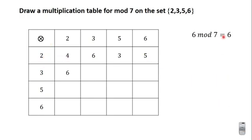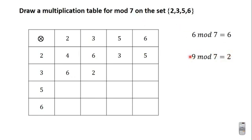Moving on to the next row. 3 × 2 is 6, and 6 mod 7 is 6. 3 × 3 is 9, and 9 mod 7 is 2 — you subtract 7 from 9 and get 2, which is smaller than the modulus.